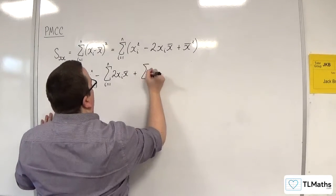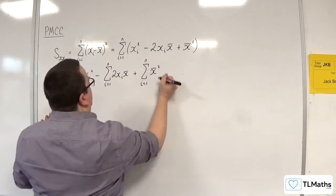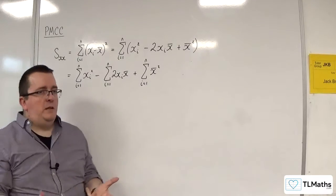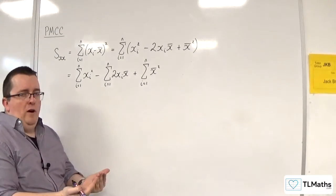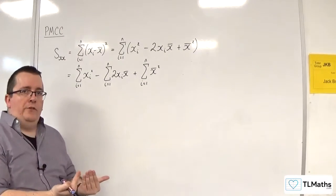Plus the sum from i is 1 to n of X bar squared. Now, just as I did in the previous video, because X bar and Y bar are just constant values, I'm going to factor them out of the summations.